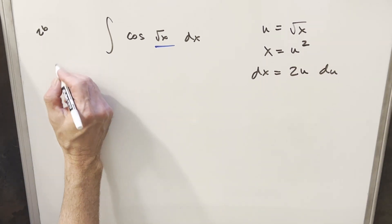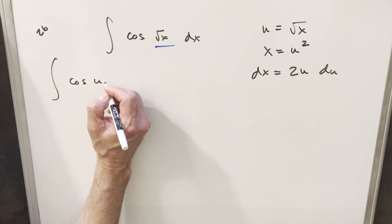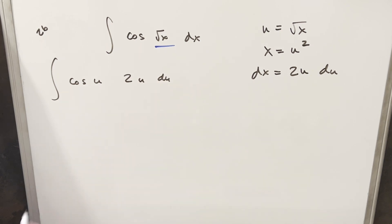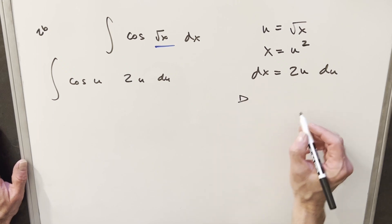So we'll go ahead and substitute right away. We're going to have cosine of u. Our dx becomes 2u du. This looks like a good case for integration by parts. We can do this using the di method or tabular integration.